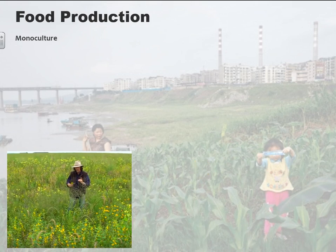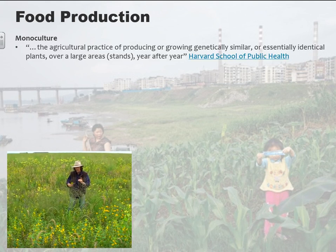Let's talk about food production. First we're going to address monoculture. Monoculture is the way that most farming is done, especially in the United States. Monoculture is basically when you grow a single crop over a very large area of land — that's the easiest way to think of it. Mono meaning one, culture referring to crops or cultivation.